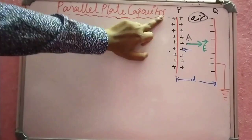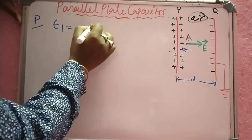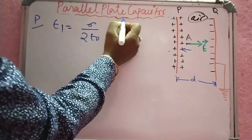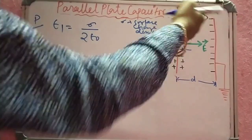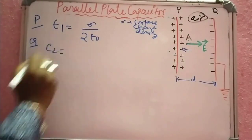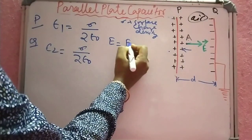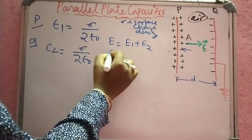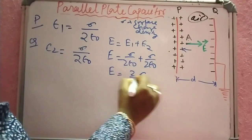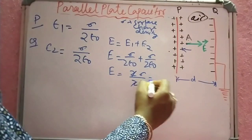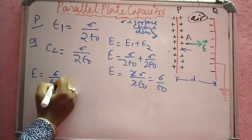If you look at the electric field intensity, E1 is equal to sigma by 2ε₀, where sigma is the surface charge density. Similarly, E2 is equal to sigma by 2ε₀. The total electric field intensity E is equal to E1 plus E2, which gives sigma by 2ε₀ plus sigma by 2ε₀, so E is equal to sigma by ε₀. This is equation number 1.